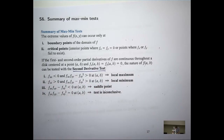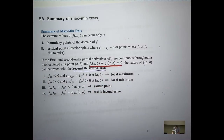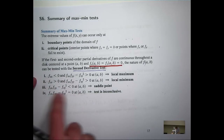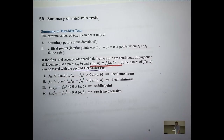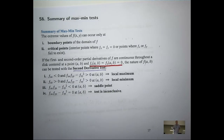This is a summary of the second derivative test. Suppose I have a point that satisfies the critical point equations. Then you can test whether the point leads to a local max, a local min, or something in between — the saddle point — using the second derivative test. The hardest thing to remember is the determinant D of the Hessian matrix. Part four is important: if D equals zero at your critical point, then the test is inconclusive — you cannot apply the test, it doesn't tell you anything.